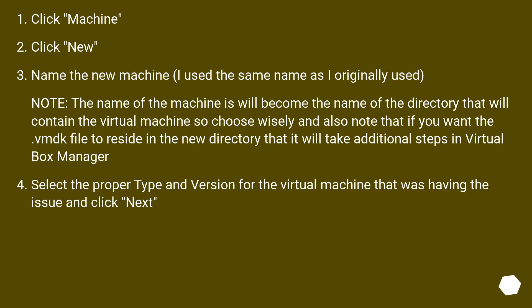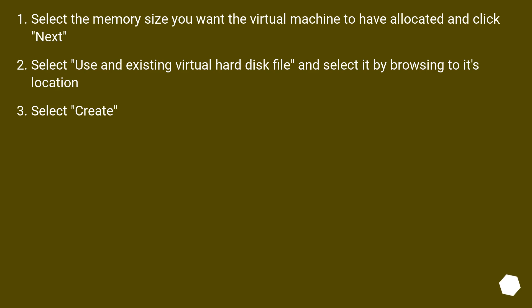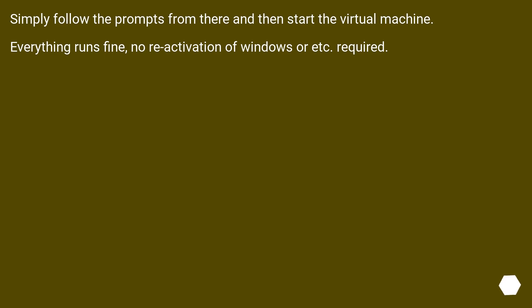Open VirtualBox Manager, click Machine, then click New. Name the new machine — note that the machine name becomes the name of the directory containing the virtual machine, so choose wisely. Also note that if you want the VMDK file to reside in the new directory, that will take additional steps in VirtualBox Manager. Select the proper type and version, click Next. Select the memory size and click Next. Select 'Use an existing virtual hard disk file' and browse to its location, then select Create. Follow the prompts and start the virtual machine — everything runs fine, no reactivation of Windows required.